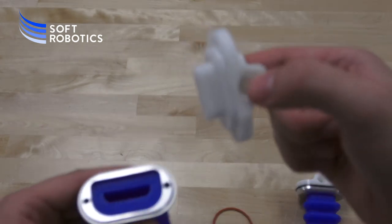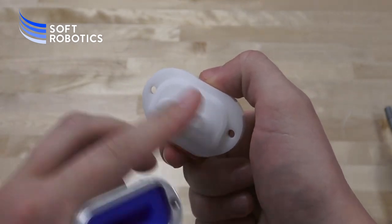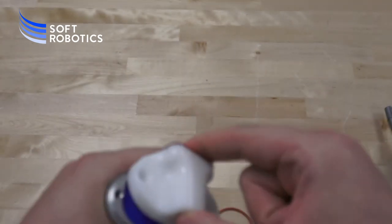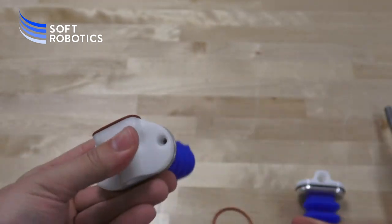So now I'm going to grab my Delrin piece. And again, you'll notice the slot here has a flat edge and then a curved edge. Again, we're just going to make sure that that lines up with the appropriate slot on the bezel and the finger.